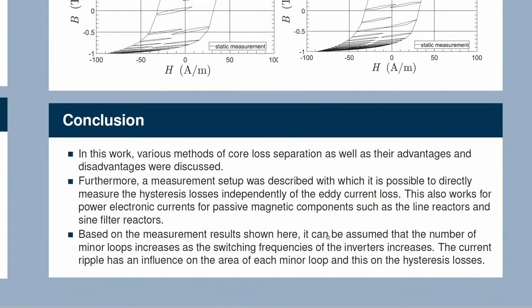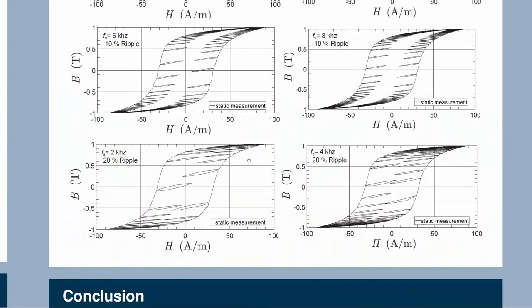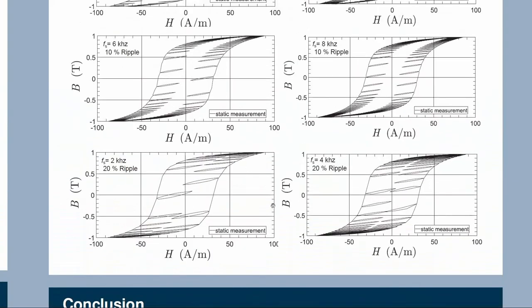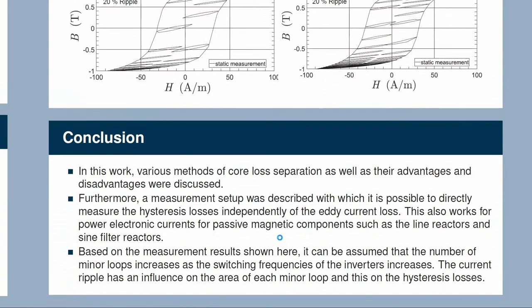In conclusion, I compared various methods for core loss separation and used a new technique based on the IEC standard for direct current measurement of the static behavior of soft magnetic material. I converted the power electronic current into a DC current, making it possible to measure the hysteresis loss density under these conditions. This data can be used in the future to improve core loss models currently in use. The results show that with increasing switching frequency the number of minor loops increases, and with increasing ripple the area of every single minor loop increases.